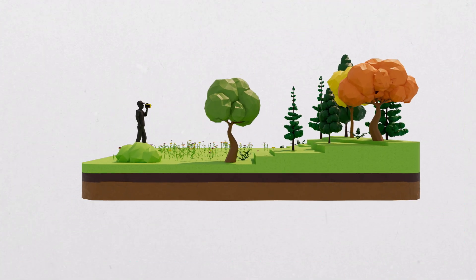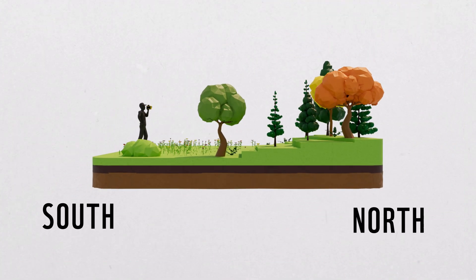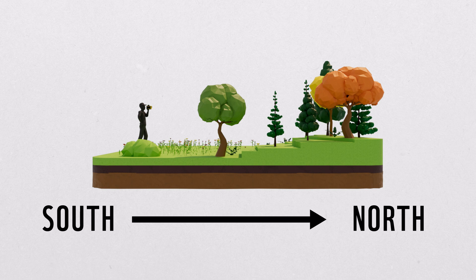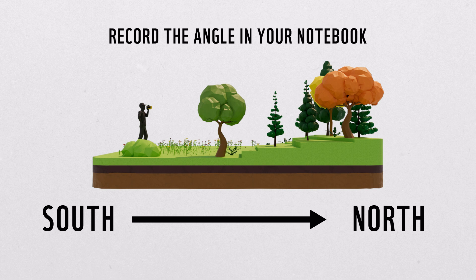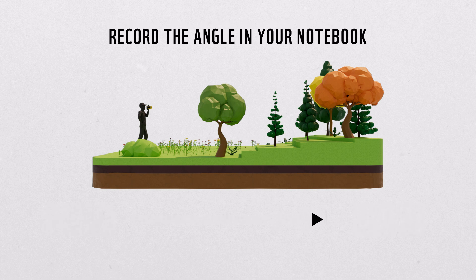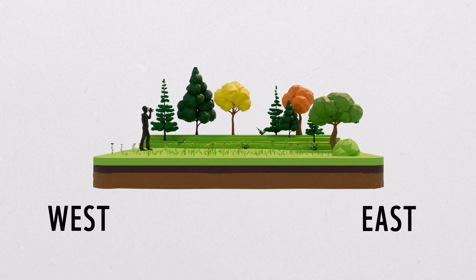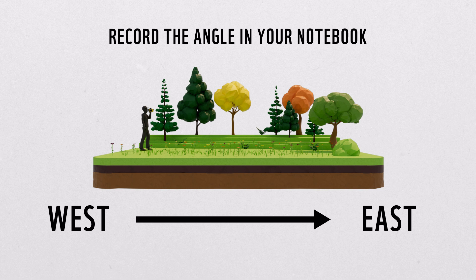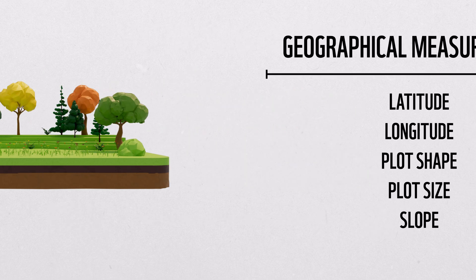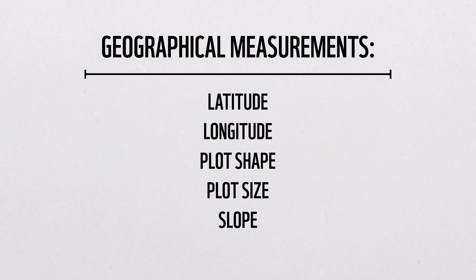Next, with a laser rangefinder, stand on the south side of the plot and aim north to obtain the slope of the plot. Record this angle in your notebook. Then, stand on the west side of your plot and aim east, measuring the slope of your plot from this direction. Record this angle in your notebook. With these geographical measurements in hand, it's now time to identify and measure the trees within this plot.